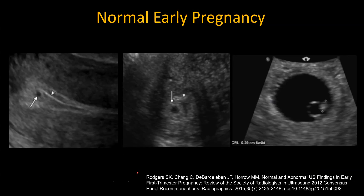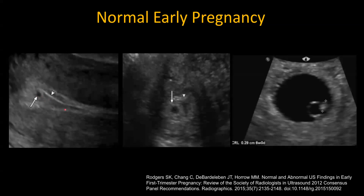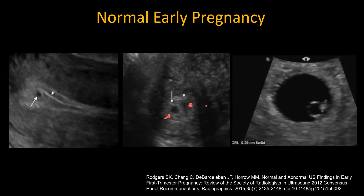For normal early pregnancies, there are a couple of signs that have been described. The intradecidual sign is where you see an eccentrically located gestational sac in the echogenic decidua. The second sign is the double sac sign, consisting of two concentric echogenic rims with a tiny fluid collection of endometrial fluid. The inner ring is the decidua capsularis around the chorion, and the outer ring is the decidua parietalis.